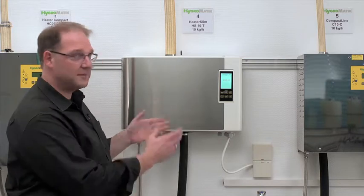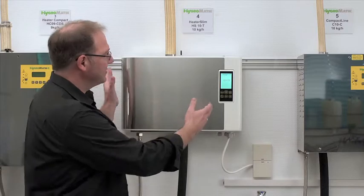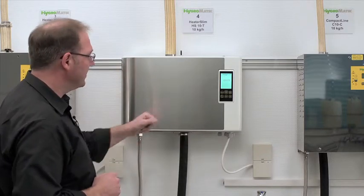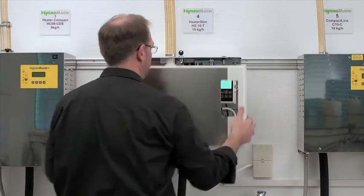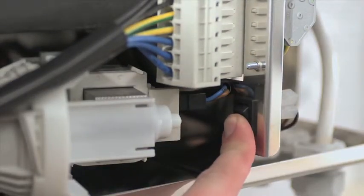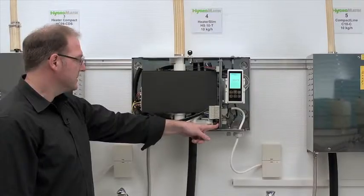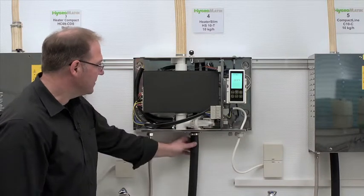Before I begin with the general maintenance of the unit I first need to make sure that the water is drained from the unit. To do that I first take off the cover and activate the drain pump. Now all the water should be drained.